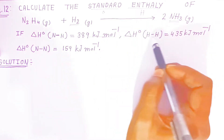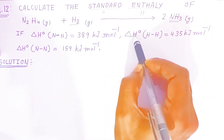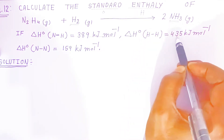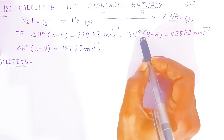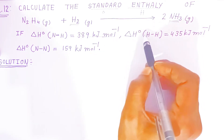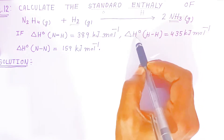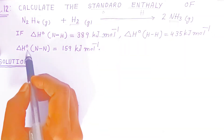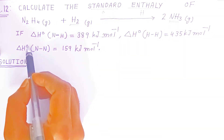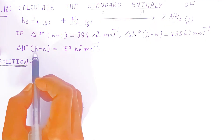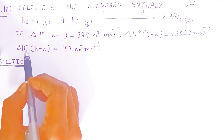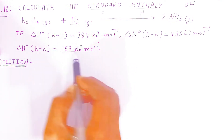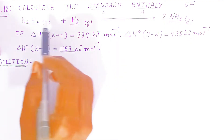The standard bond enthalpy of the hydrogen-hydrogen (H–H) bond is given as 435 kilojoules per mole. The standard bond enthalpy of the nitrogen-nitrogen (N–N) bond is given as 159 kilojoules per mole.